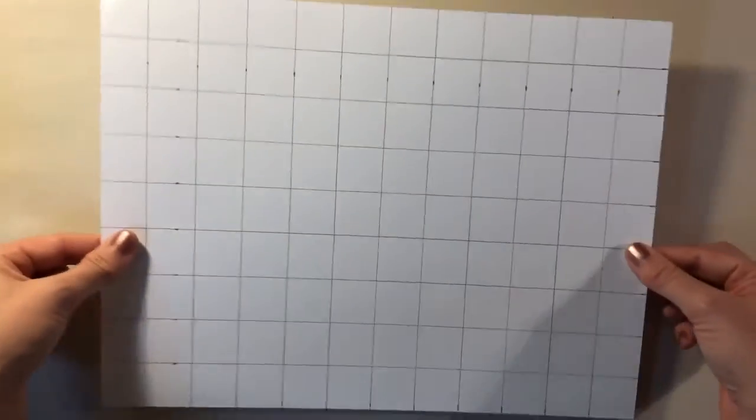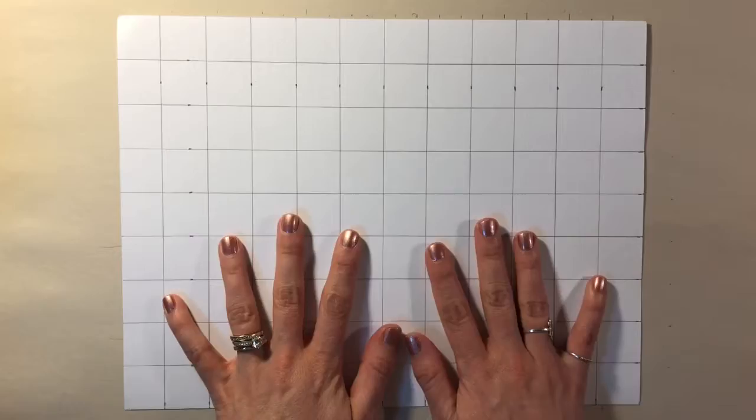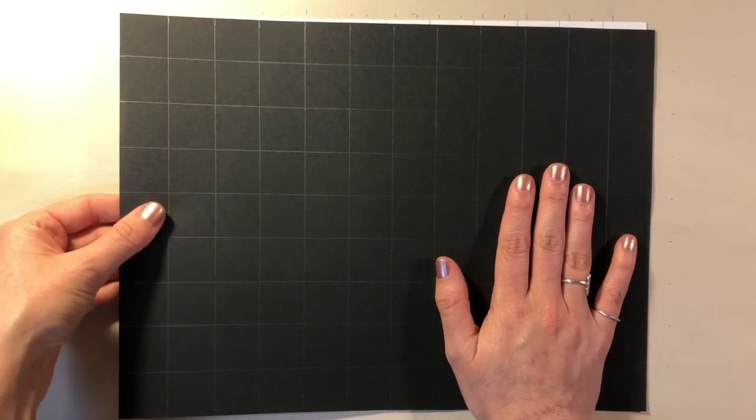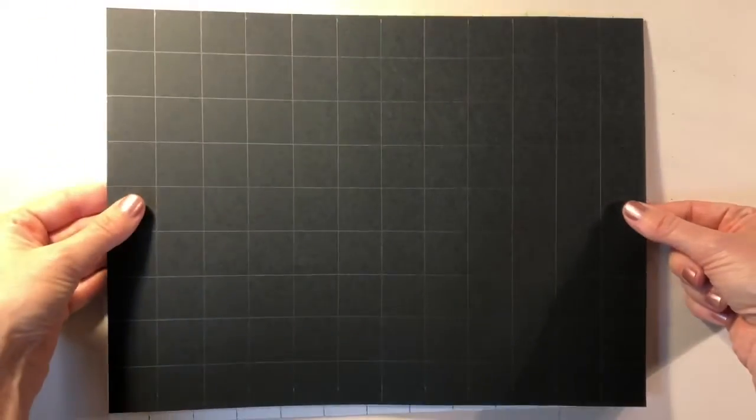When you get finished, you should have a piece of paper that looks like this, except yours is drawn out on your black piece of construction paper.